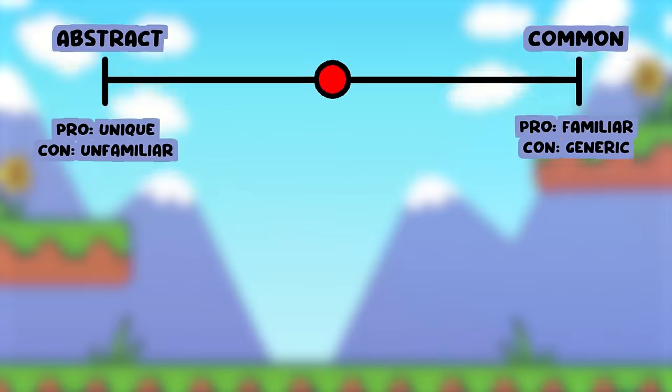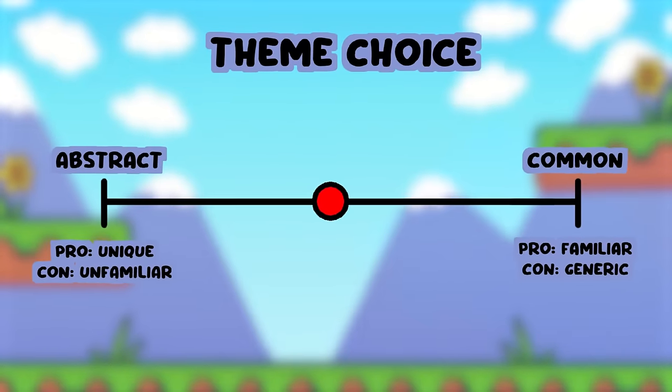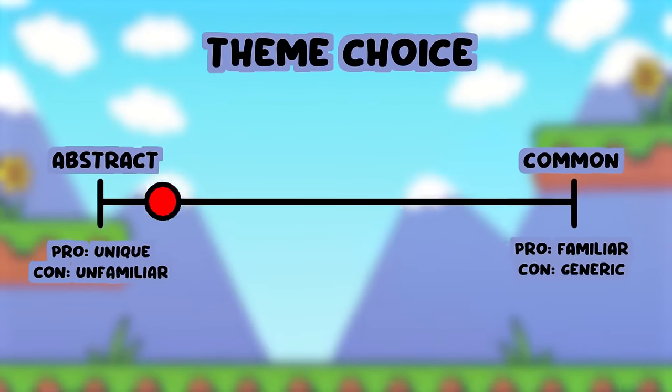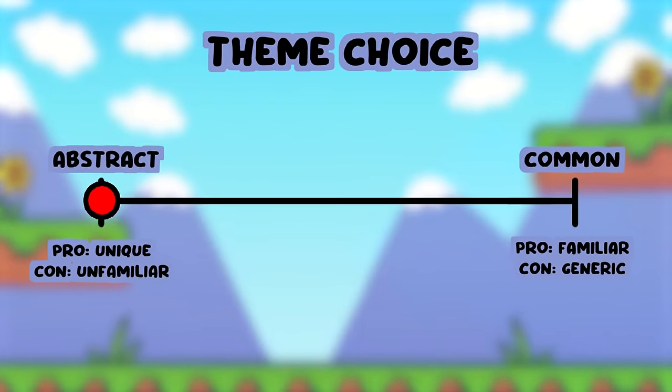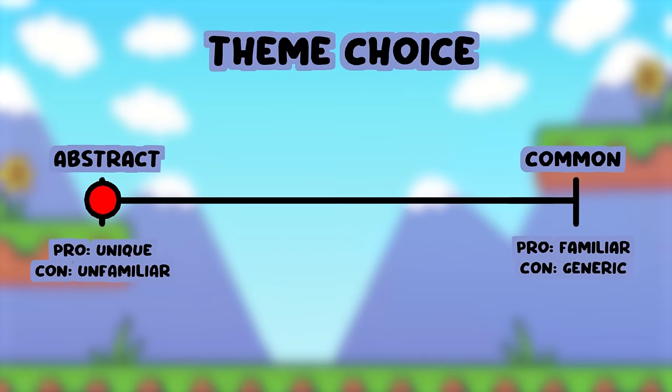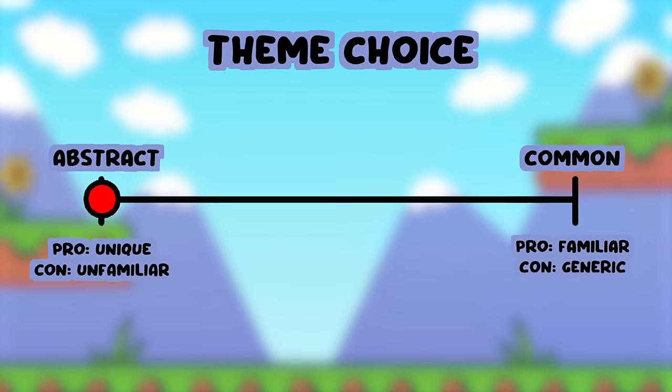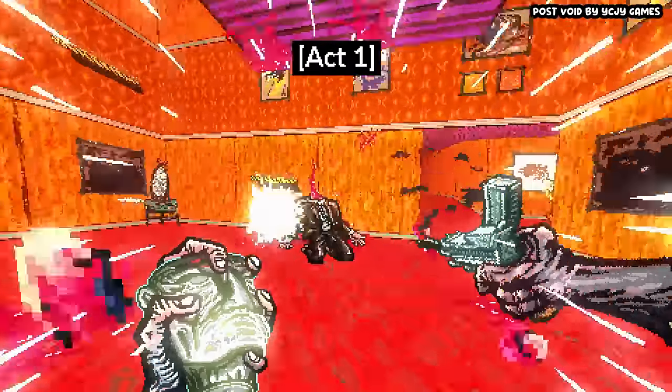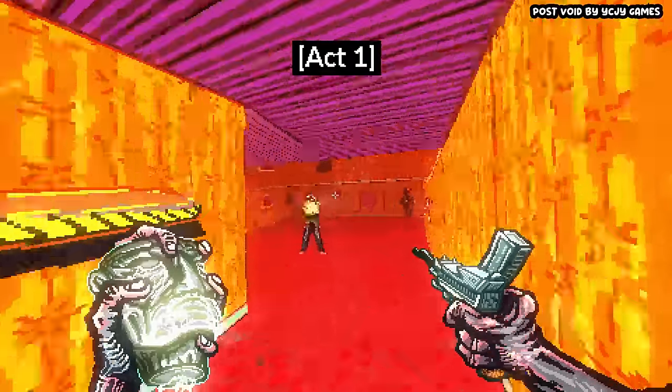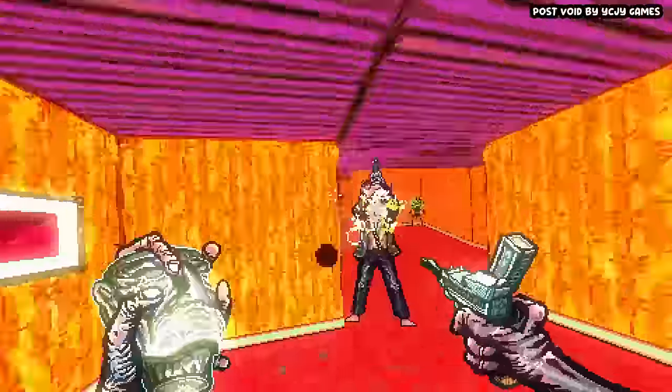There are some things to keep in mind if you pick a really abstract theme — it may be hard to gain interest if nobody can tell what's going on. But on the flip side, if it's so abstract and weird, that could be the main reason people check out your game because it's so different from what's already out there on the market. Post Void had this effect on me — I checked it out, I played it and I love it. The reason I checked it out was because it looks more abstract than the games I'm used to.